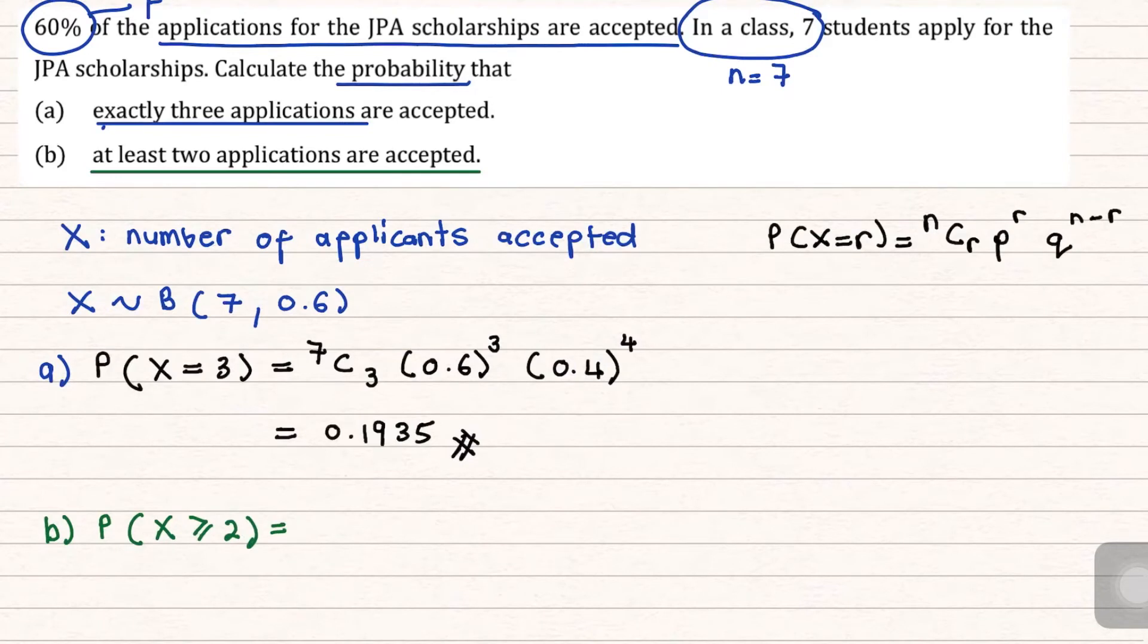Now, again, for greater than or equal, you have to sum up from the R successes until the N trial. So you're going to have P(2) plus P(3) plus P(4) plus P(5) plus P(6) plus P(7). Now, as I mentioned before, you can always write your P(X=2) as such.